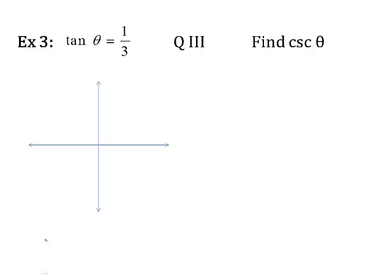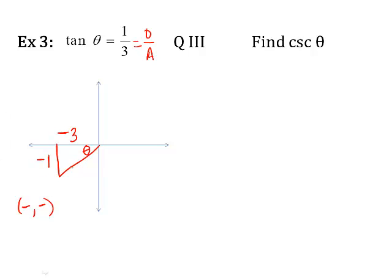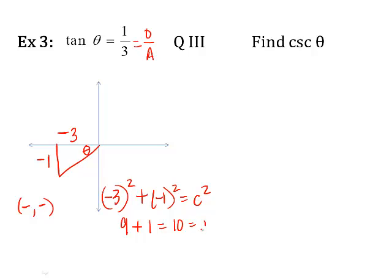Let's try another one. The tangent of theta is one-third in quadrant three. Find the cosecant. Draw your triangle in quadrant three, put theta at the origin. Tangent is opposite over adjacent, so the opposite of theta is one and the adjacent side is three. We're in quadrant three, so x's are negative and y's are negative. We've got to put the correct signs in there before doing the Pythagorean theorem, since I need the hypotenuse to get cosecant. So: negative three squared plus negative one squared equals c squared. That's nine plus one, which equals ten. So c is positive or negative square root of ten — but it's a hypotenuse, so it can't be negative. It's the positive square root of ten.